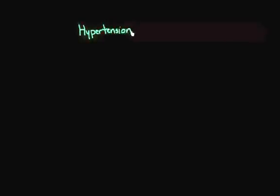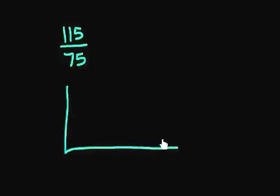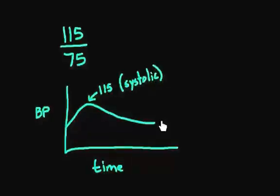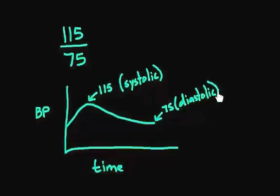We actually categorize it in different groups. Let's use my blood pressure of 115 over 75 as an example. I had drawn a small figure where I had blood pressure on one side and time on the other side. The peak is 115 — this is the systolic blood pressure — and the lowest point is 75, which is my diastolic blood pressure.